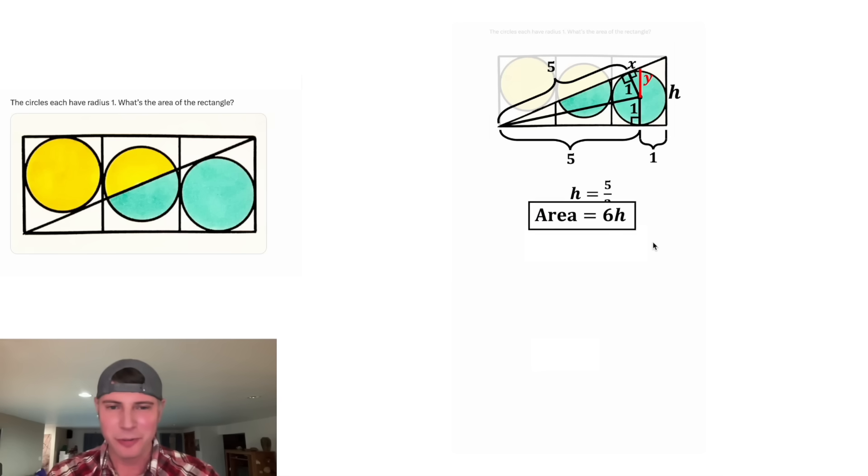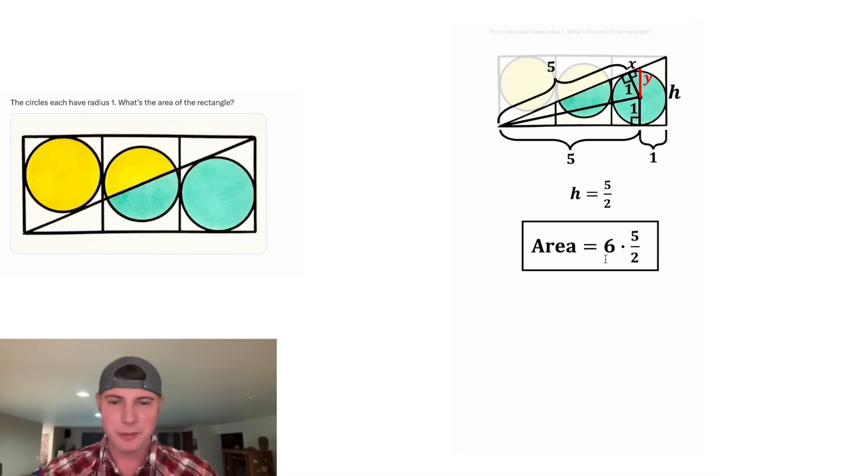Let's bring back the rectangle's area formula and give ourselves some room. In the place of the h, let's plug in 5 halves. Then we can simplify the 6 and the 2 on bottom. That would become 3. And then 3 times 5 is 15. Let's give it a label of units squared and it already has a box. The area of this rectangle is 15 units squared. How exciting.